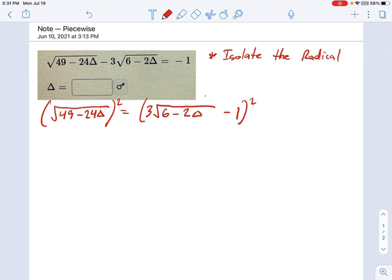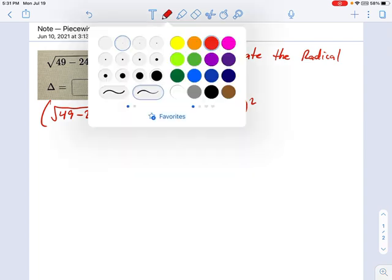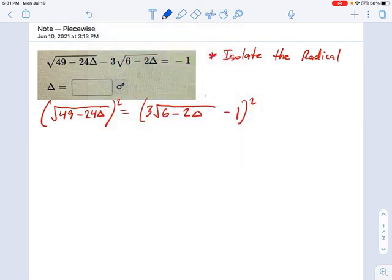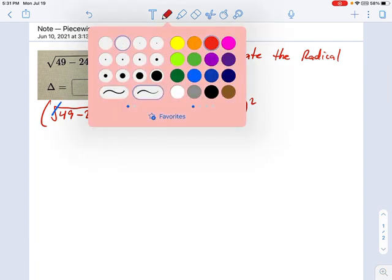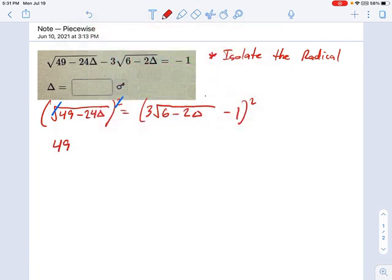In fact, it's going to look worse before it looks better. So just hang on. So this squared in the exponent cancels out the radical on that side. That's nice. And we get a simple 49 minus 24 delta over here on the left.